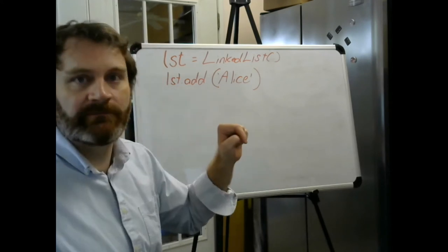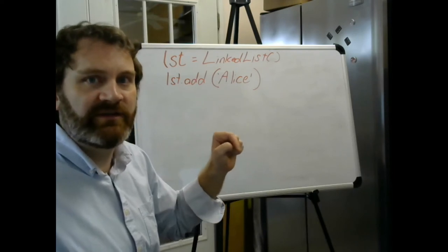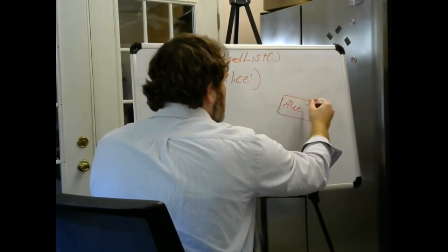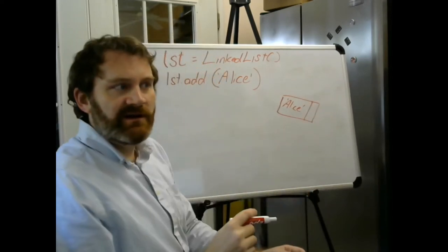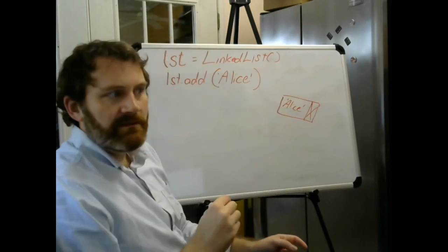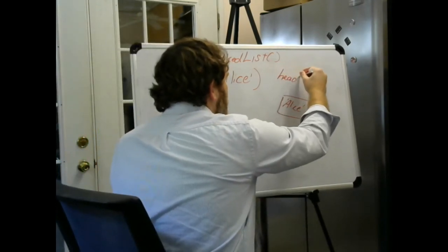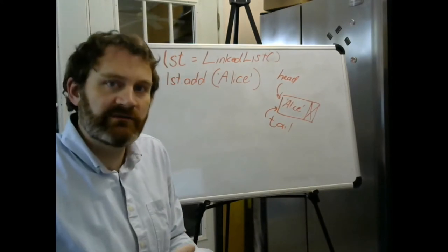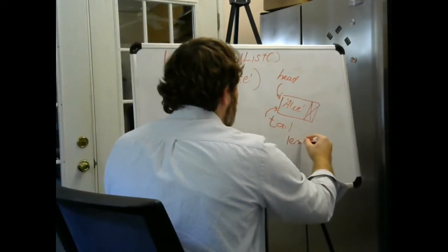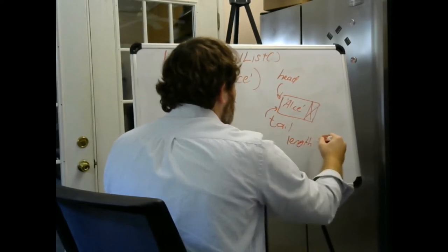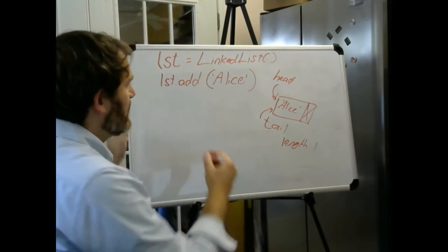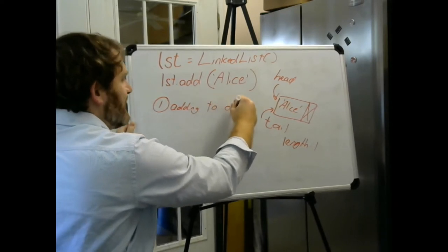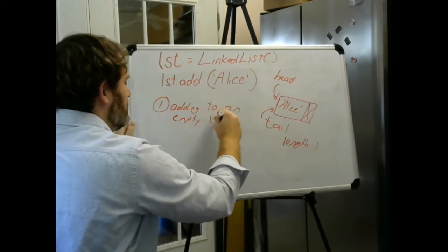Now I'm going to add Alice. If I do it on an empty list, Alice will be the only thing in the list, and both the head and the tail need to refer to Alice. And we'll have a length of one. This is a special scenario — adding to an empty list. What if the list is not empty? If the list is not empty when I add to it, let's say we add Bob.